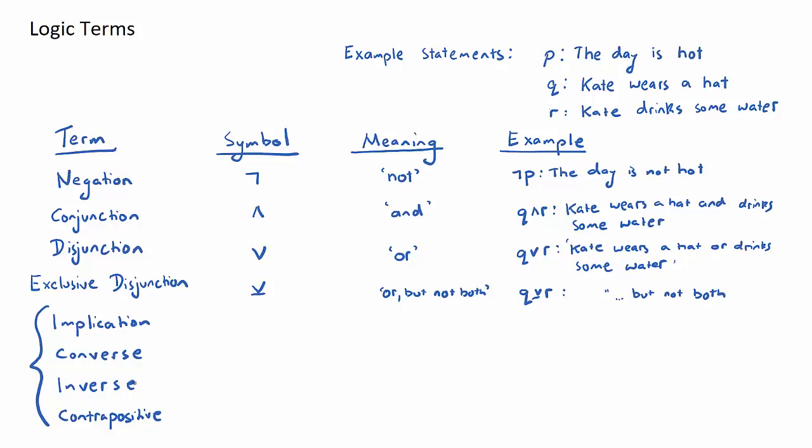Now the last four are related and they often are used in the same questions. We're given an initial statement and then the question will ask whether to write out the converse, inverse, or contrapositive. Let's start with implication. This is a very common one. It appears in nearly pretty much every single logic question. It has a symbol like this and it means if something then something. If I have p implication q, and just keep in mind my statements up here, p is the day is hot, q is Kate wears a hat. So p implication q will mean if the day is hot then Kate wears a hat.